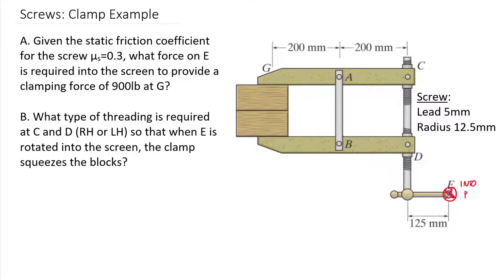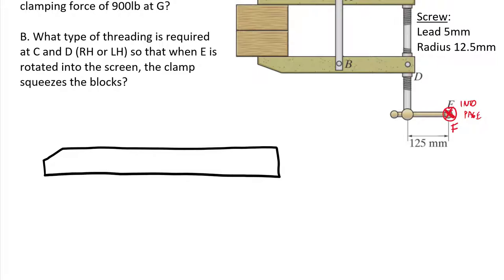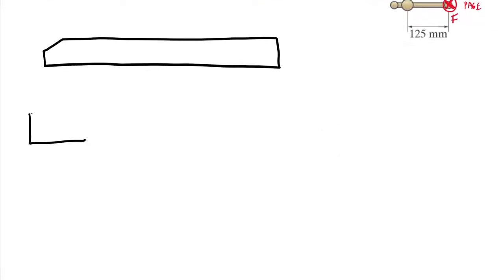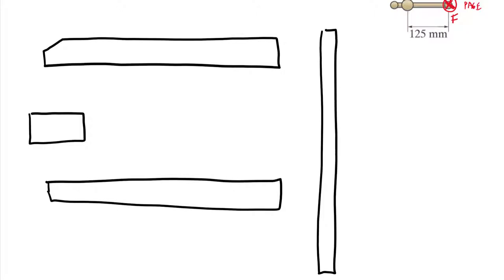All of these screw problems are fundamentally equilibrium problems. We're looking at an impending motion case of friction. Being an equilibrium problem, we need to draw a free body diagram. I'll draw this a little large — it's kind of simple but we'll add force vectors and impending motion vectors. Here I draw my block, the lower arm, and the threaded rod screw arm with the handle. This is point E, point G, point A in the middle, point C, point D, and point B.